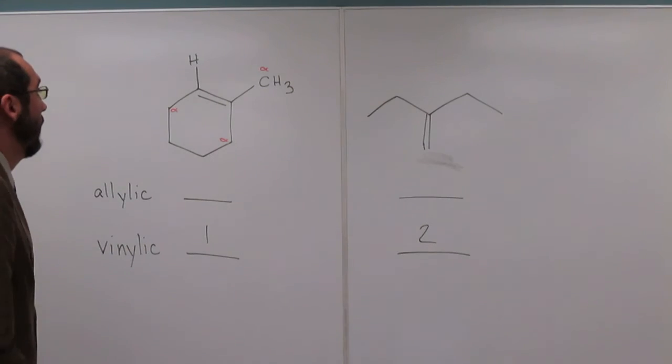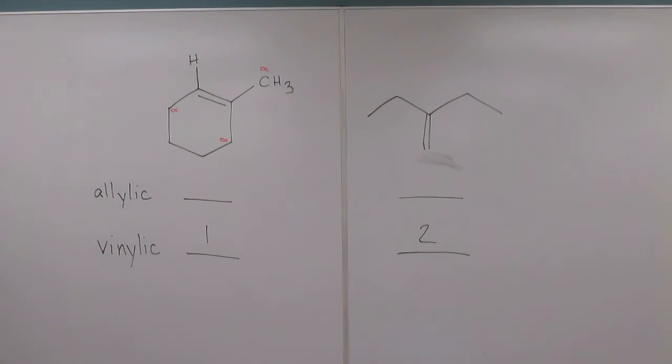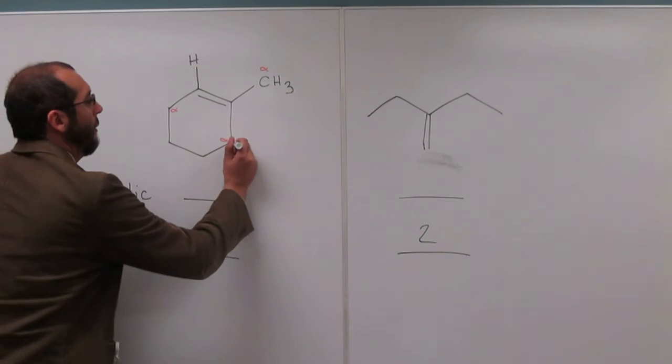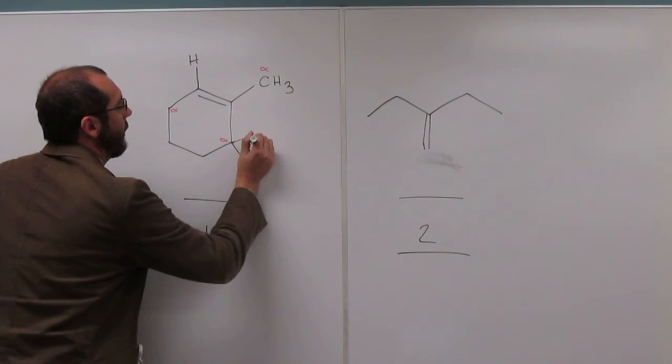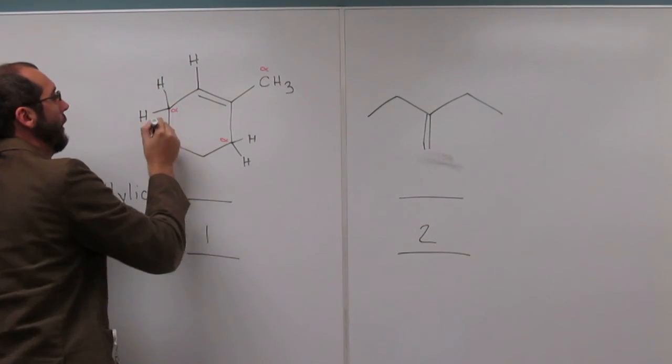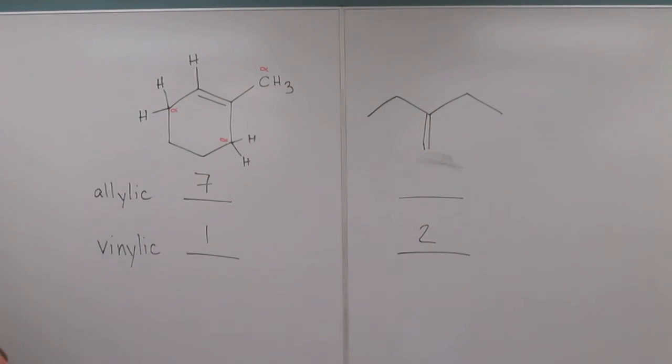So now all we do is count up the hydrogens on those carbons. So help me out. How many hydrogens are there on all three of those? Seven. Seven, right? So hopefully we all see the three there. But remember, there's two there and two there. So one, two, three, four, five, six, seven.